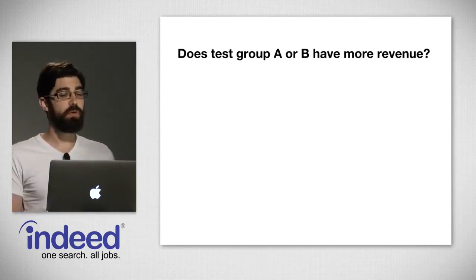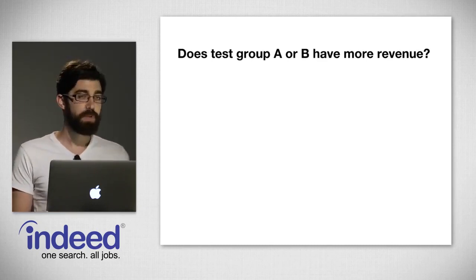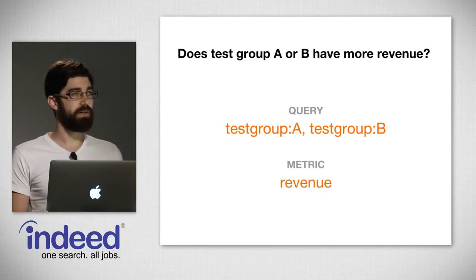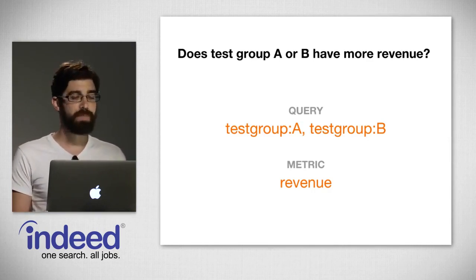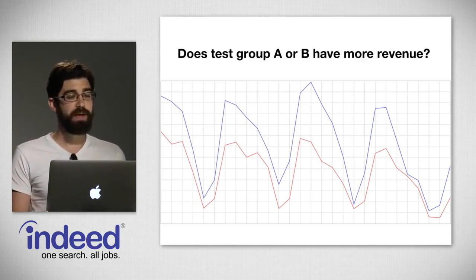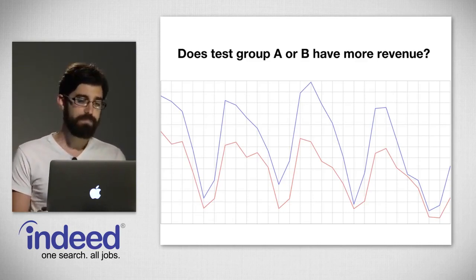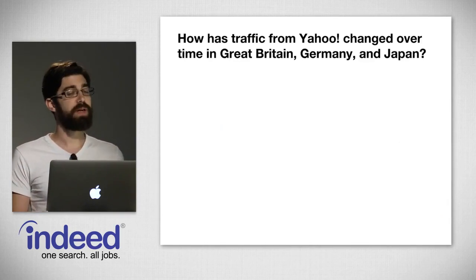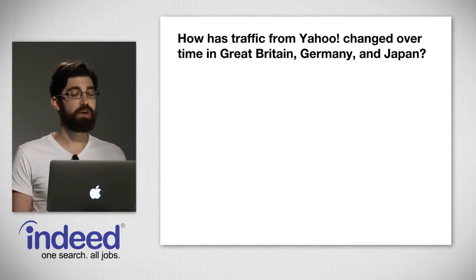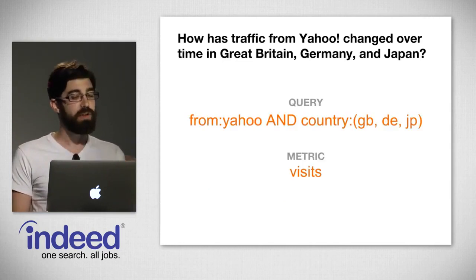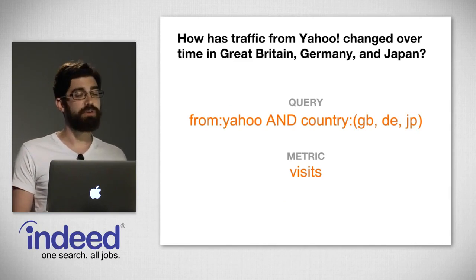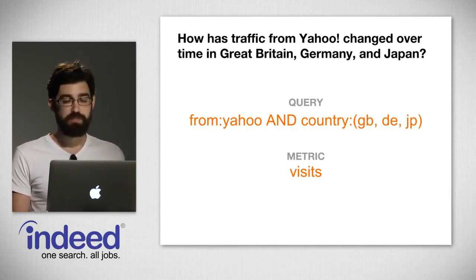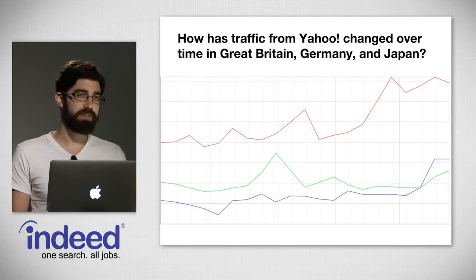Let's say we wanted to know what test group A or B has more revenue. Query test group A, test group B, metric revenue. We log every test group on every page we show. So we put in the query test group A and test group B with the metric revenue. It will find all the logs with that test group and the revenue for them, and graph it. We can also answer questions like how has traffic from Yahoo changed over time in Great Britain, Germany, and Japan. Query: from Yahoo and country GB, DE, JP, metric visits — and it outputs a graph.